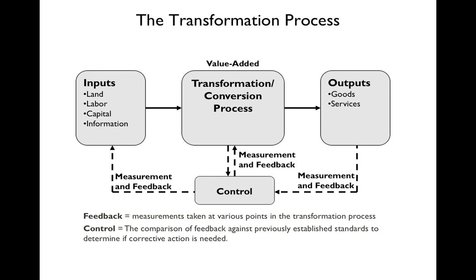The transformational process is where you add value — it's really what you do. On the left you have inputs: land, labor, capital, information, raw materials, whatever it is. You go through a transformational process, and on the output side is either goods or services. You also have feedback loops where you're always looking to see if there's something about your product or service that needs improvement, and feedback to your inputs about what needs to change.